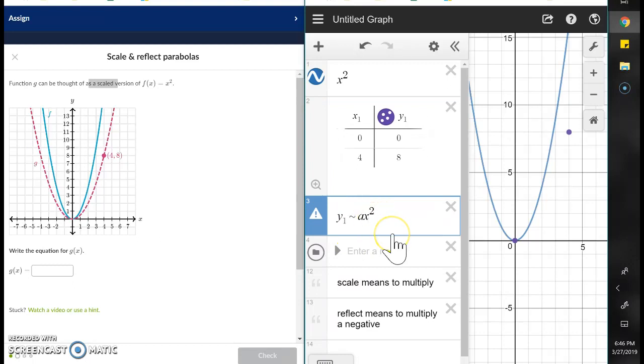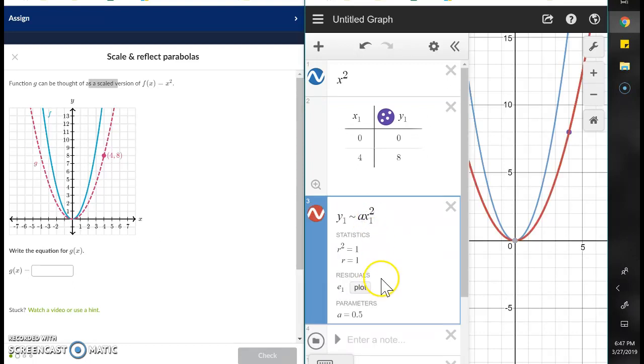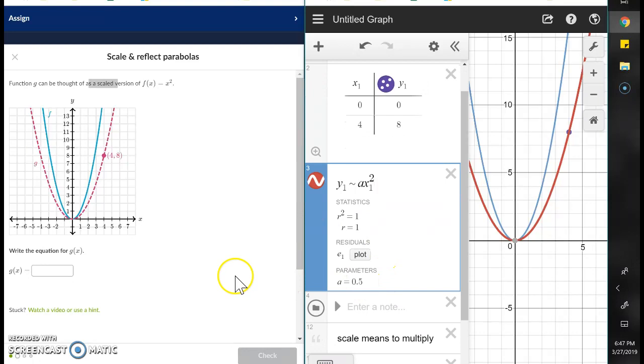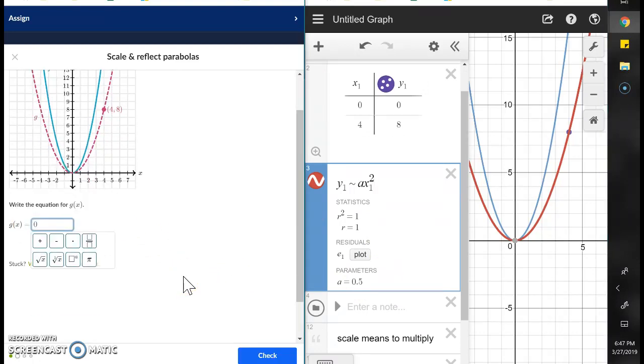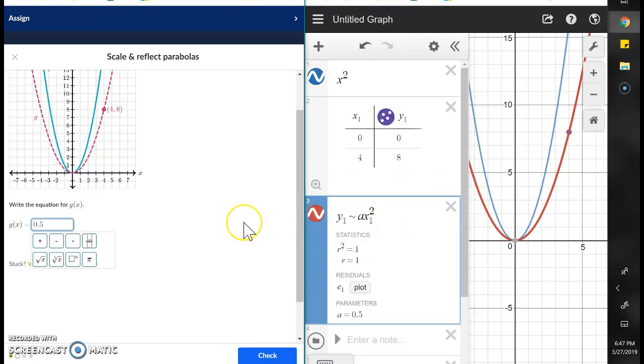Got to make sure I got the one by the x. Now we're good. 0.5, so over here I'm putting in 0.5x squared.